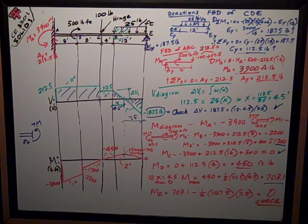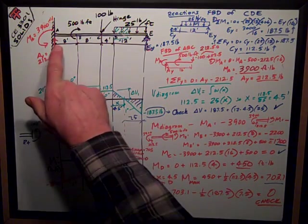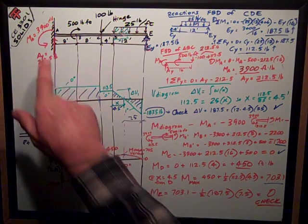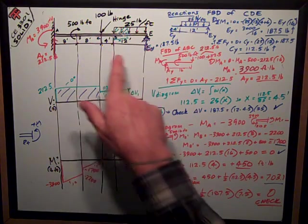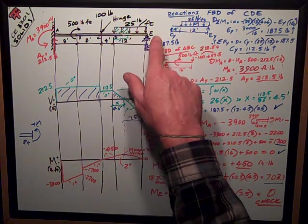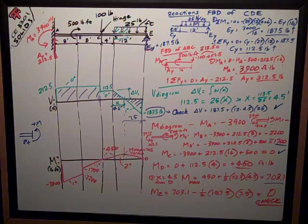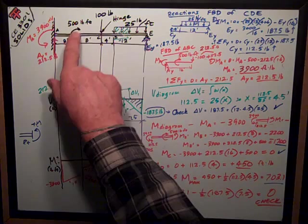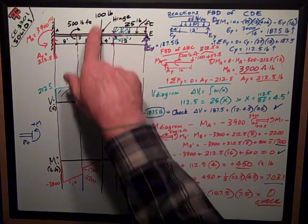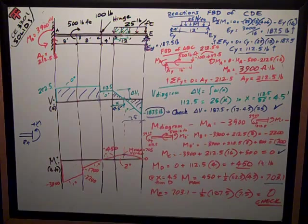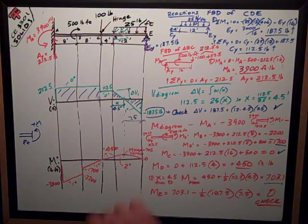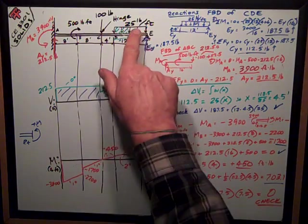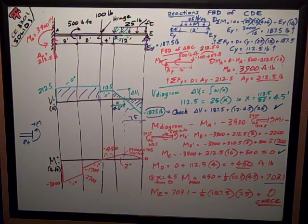I've got an example here of what I call a propped cantilever with a hinge in it. It's got a fixed support at this end, hinge in the middle, roller support at E. At this point I have a 500 foot pound moment. At the hinge I have a 100 pound downward force and I have a uniformly distributed load 25 pounds per foot starting here 4 foot from the hinge.